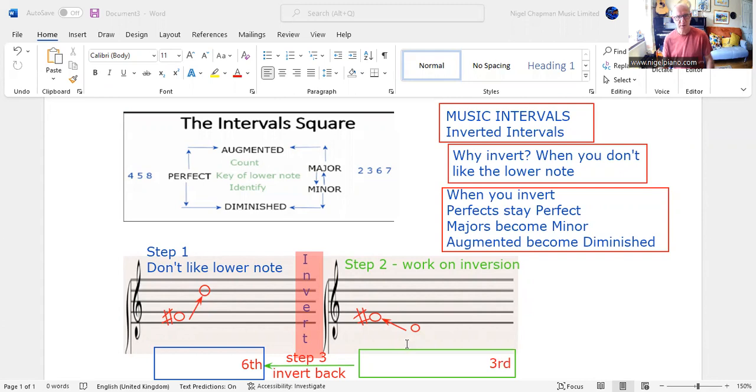I'm now going to do the work on this side here. So first of all, I'm going to count. I can see this is a third. I know that the key of the lower note is D major. I'm going to write out the scale of D major.